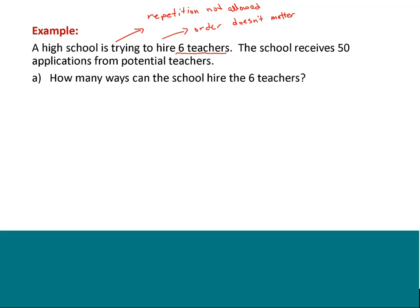So if repetition is not allowed and order doesn't matter, then what you've got is exactly 50 choose 6. Now remember what 50 choose 6 is. 50 choose 6 is 50 times 49 times 48 times 47 times 46 times 45. That first 50 says in the first position any of the 50 candidates could work. That 49 says in the second position any of the remaining candidates could be just fine, and you keep going down.